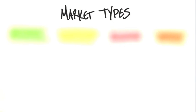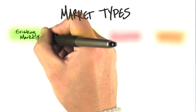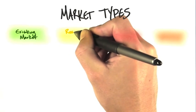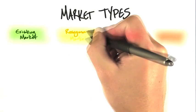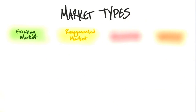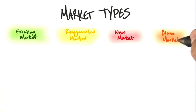It turns out that there really are four types of markets for startups. One is an existing market. Another is where you take a segment or resegment an existing market. Another is a new market, and another is a clone market.